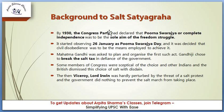What was the background to the Salt Satyagraha? By 1930, the Congress party had declared that Purna Swaraj — complete independence — was to be the sole aim of the freedom struggle. It started observing 26 January as Purna Swaraj Day, and it was decided that the civil disobedience movement would be the means employed to achieve it.